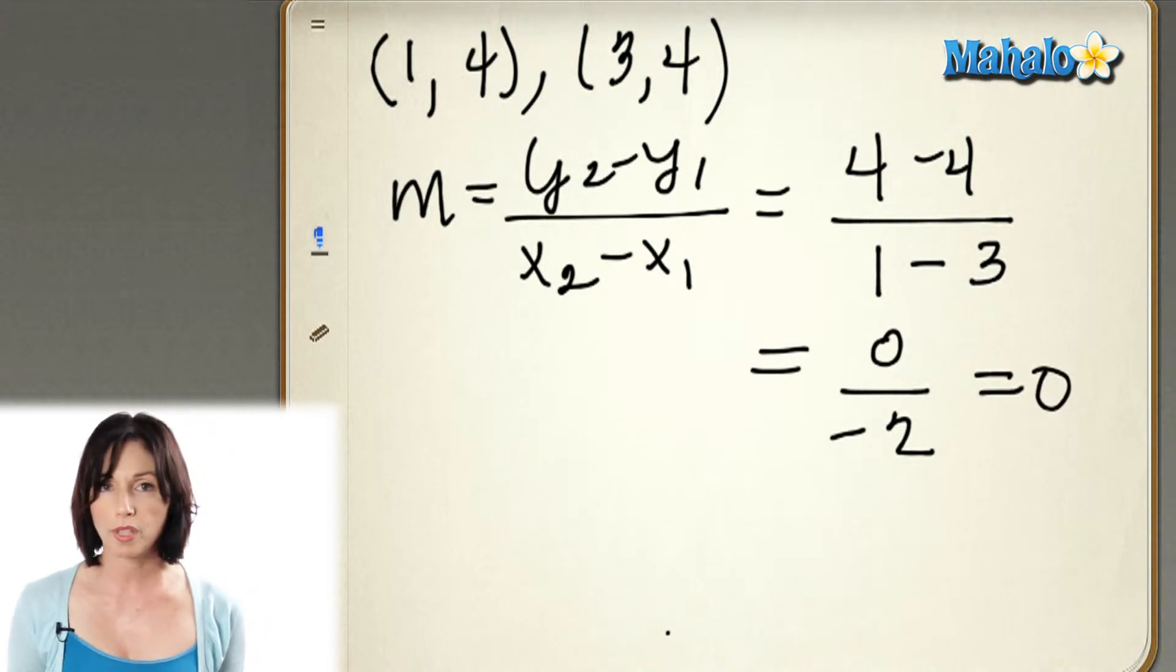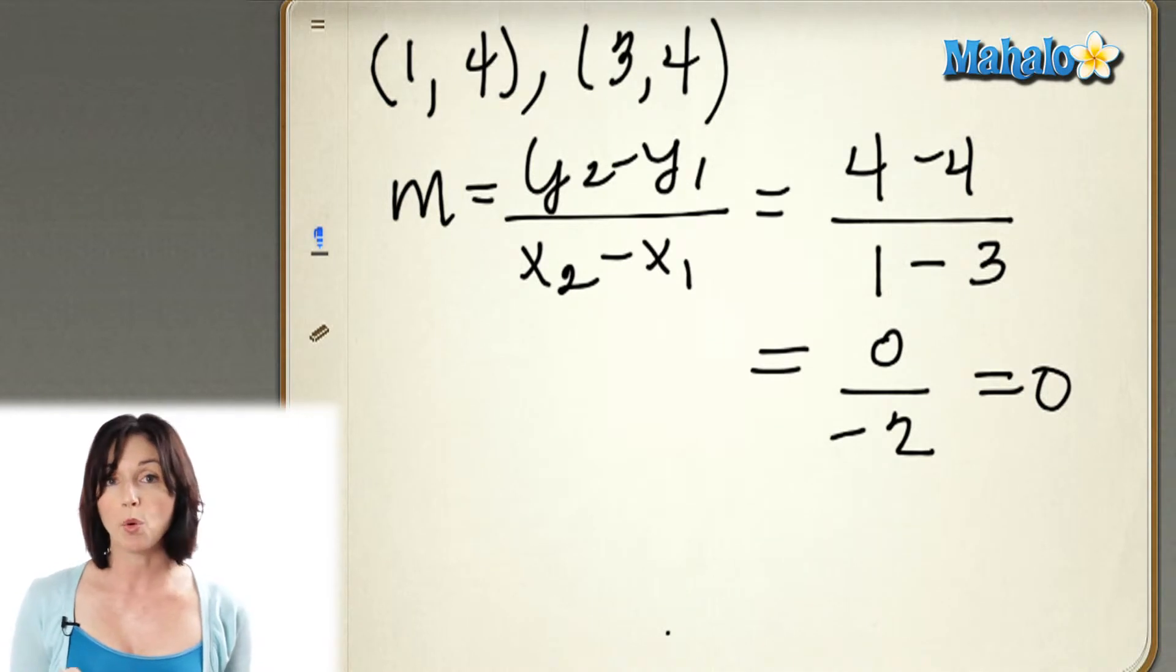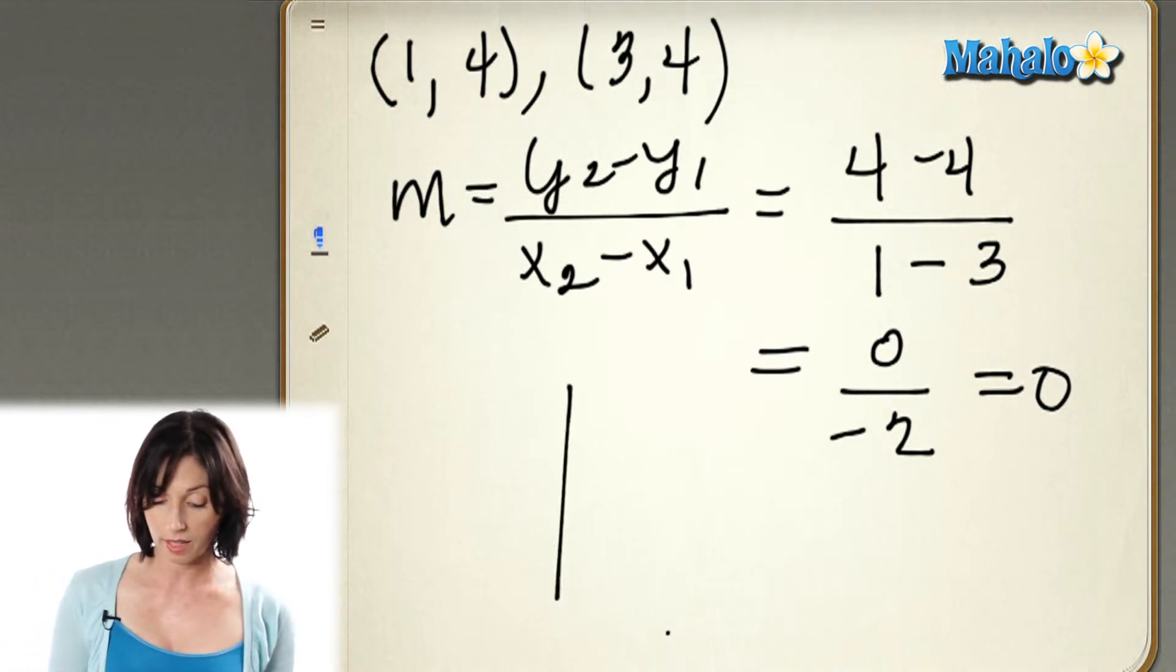So I have a slope of 0. Now, since slope is measuring how much a line inclines or declines away from the horizontal, this line, the one that joins these two points, isn't inclining or declining at all away from the horizontal. It's sloping 0. Therefore, this will be a horizontal line. It will be parallel to the x-axis.